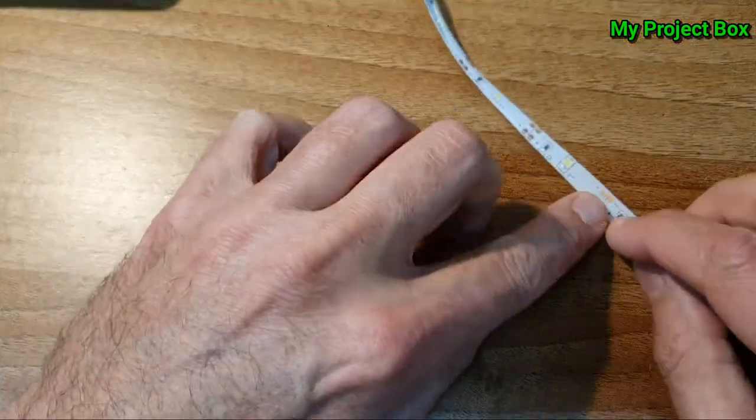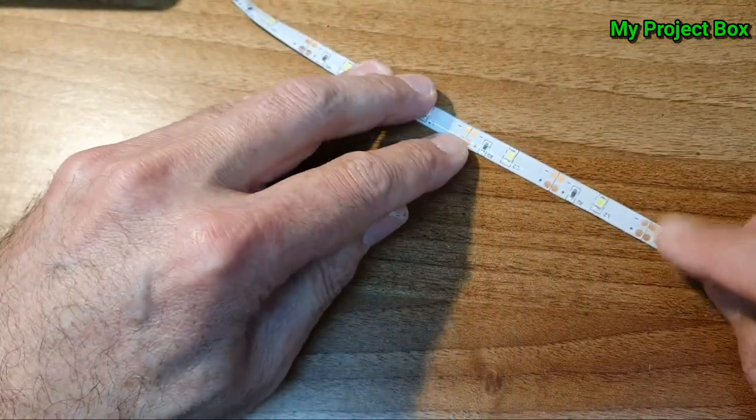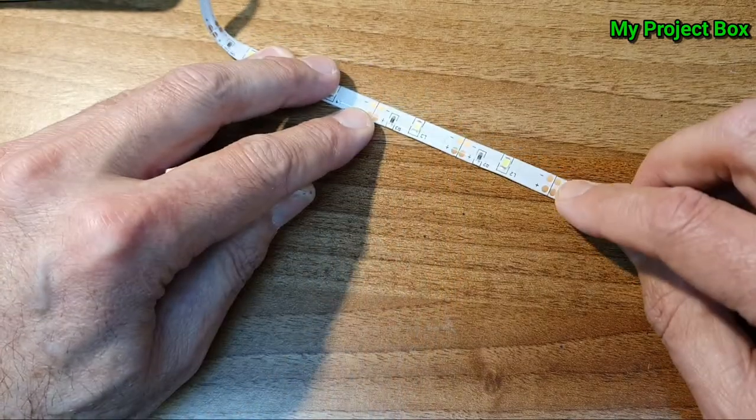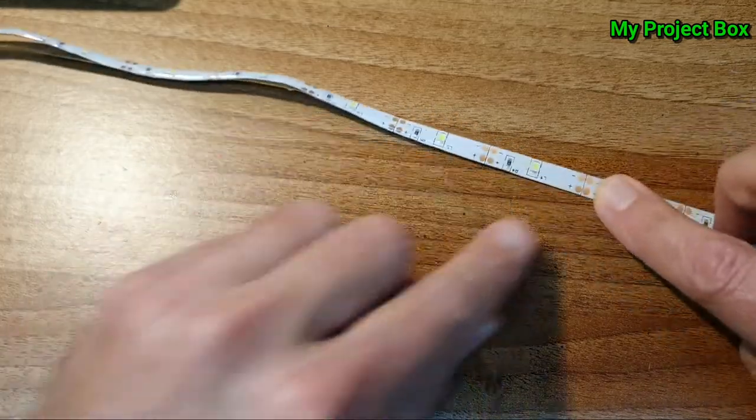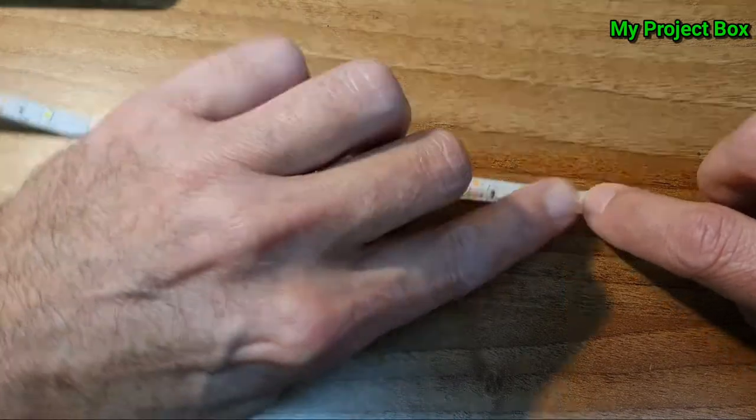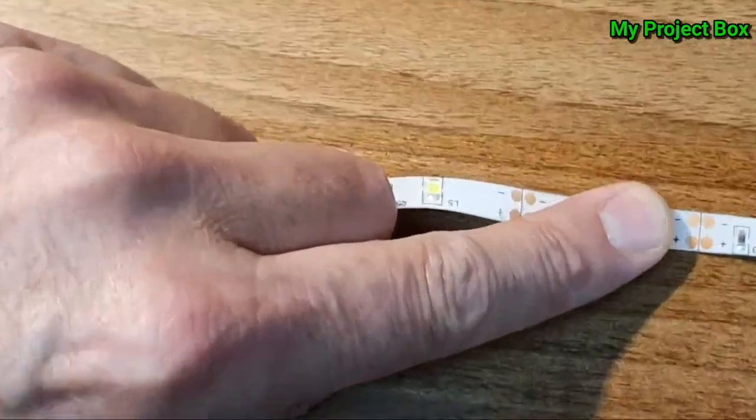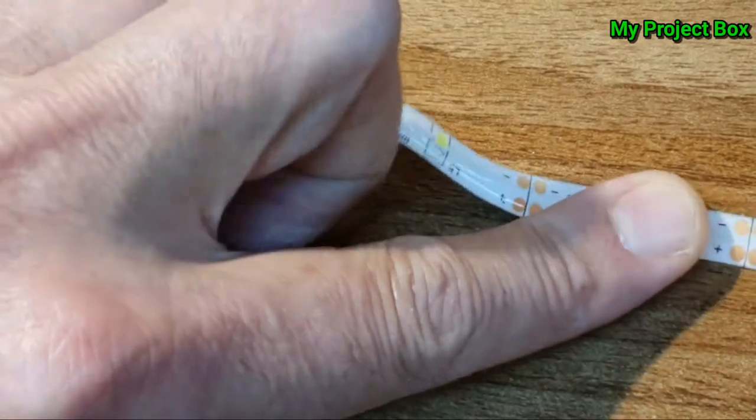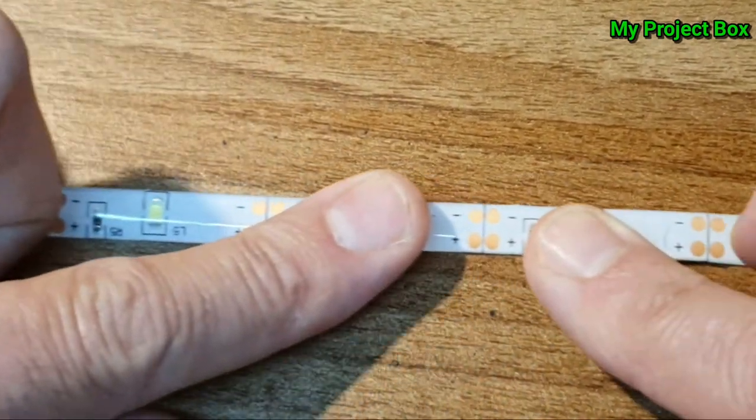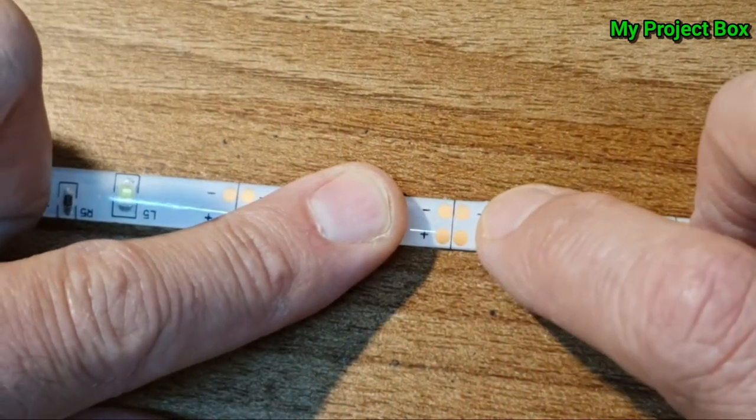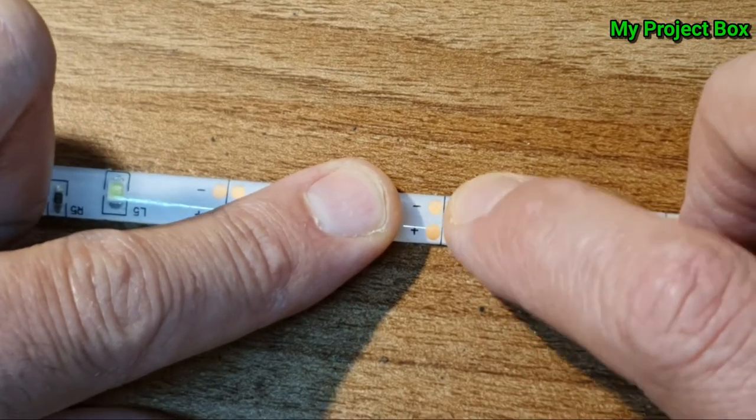There's little solder tabs all along. There's cut marks as well, so it can be cut on these points here to length, but you have to cut it on these points here - that's the cut point. Let me zoom in so you can see. Sometimes they have a little scissor marks there. This tape doesn't have it, but whenever you see the two dots together like that, there's a line there - that's where it can be cut, but it can't be cut anywhere else.